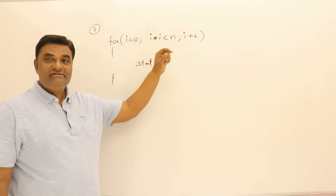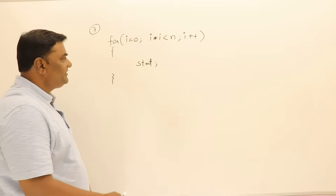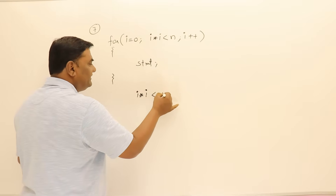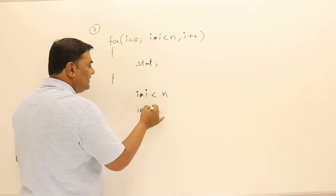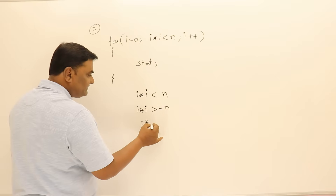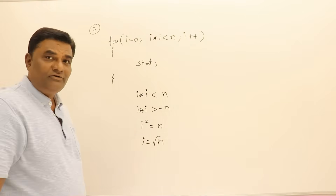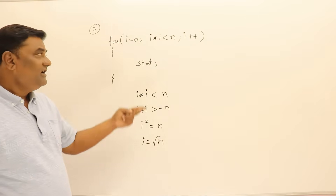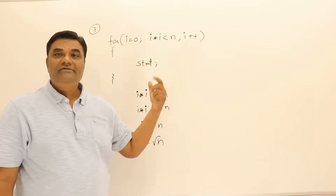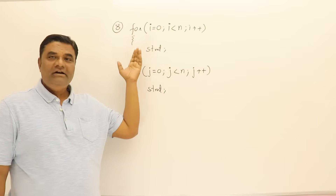Next example: i starts from 0 and the loop condition is i times i less than or equal to n. The loop executes as long as i squared is less than n and terminates when i squared is greater than or equal to n. Setting i squared equal to n gives i equals root n. So this loop executes for root n times — order of √n.